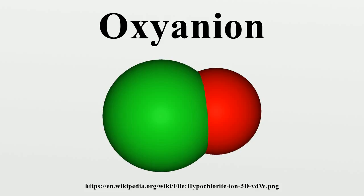Thus molybdenum does not form MoO6^6-, but forms the tetrahedral molybdate anion MoO4^2-. MoO6 units are found in condensed molybdates. Fully protonated oxoanions with an octahedral structure are found in such species as Sn(OH)6^2- and Sb(OH)6^-.